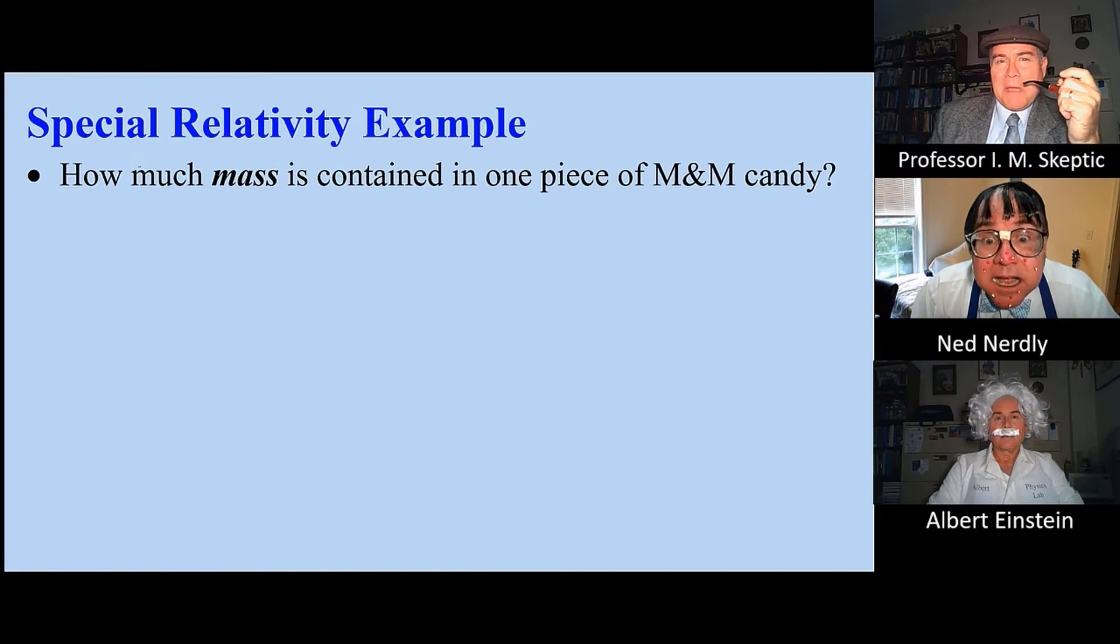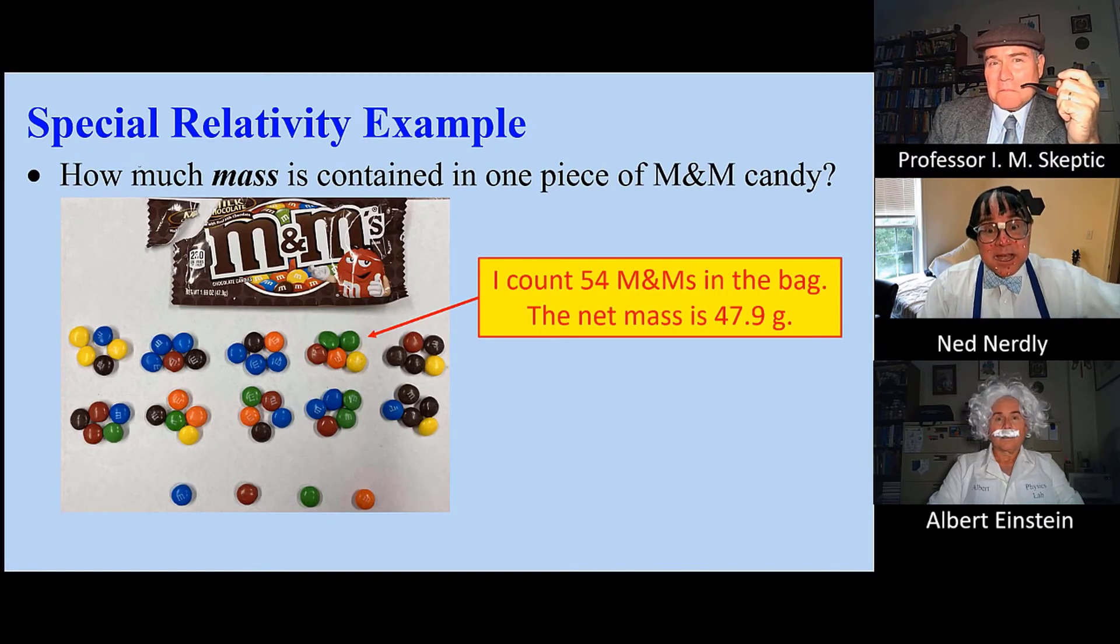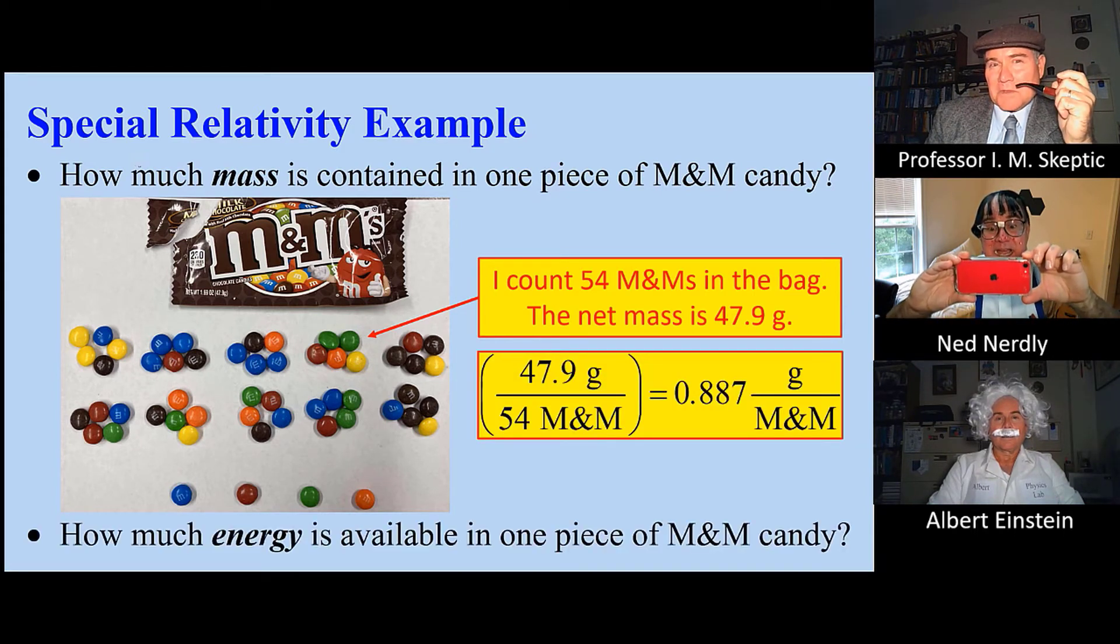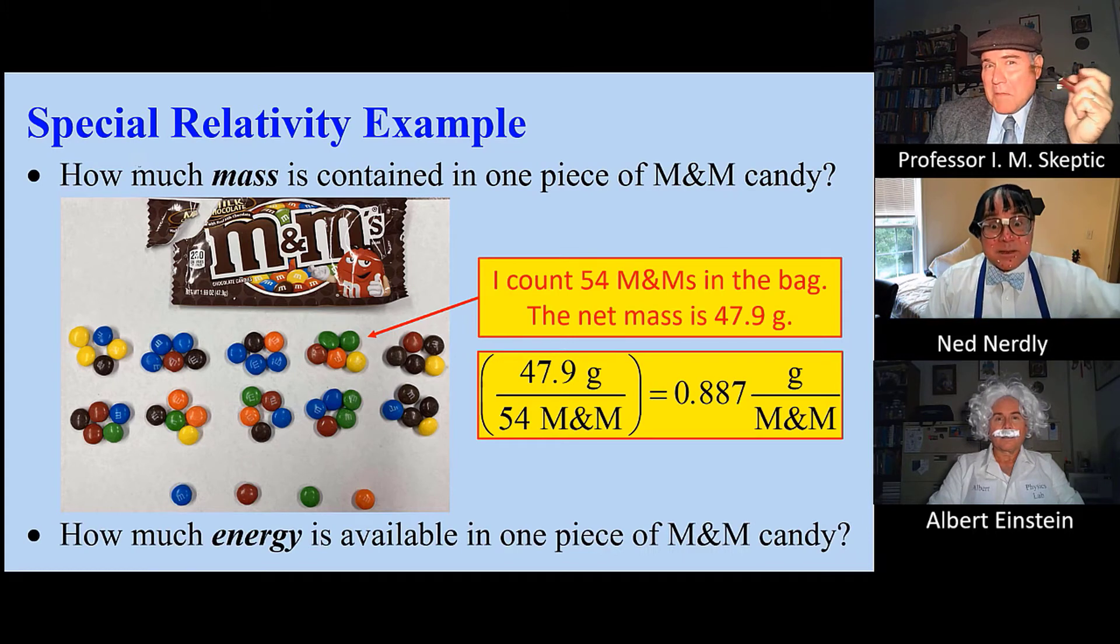Here's an example. How much mass is contained in one piece of M&M candy? When I counted 54 M&Ms in this bag, we divide mass by the number and get 0.887 grams per M&M. So how much energy is available in one M&M candy?